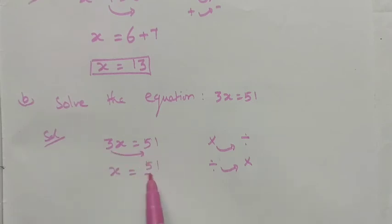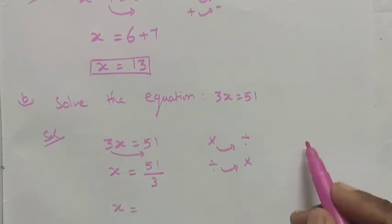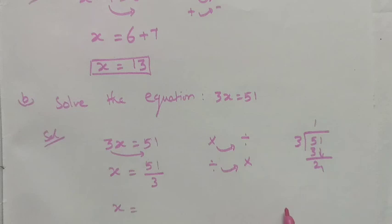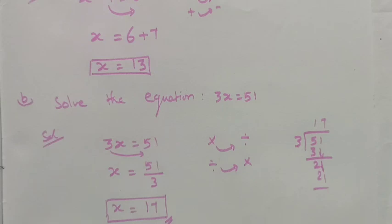So x equals 51 divided by 3. Let me calculate: 3 ones are 3, remaining is 2, bringing down the 1 gives 21, and 3 sevens are 21. Therefore x equals 17 is the answer. Thank you, students.